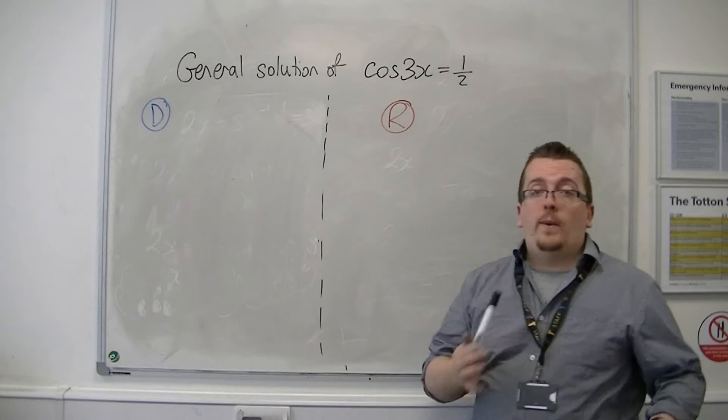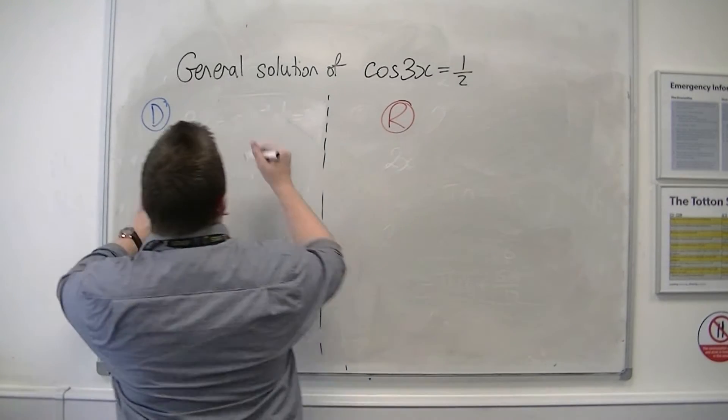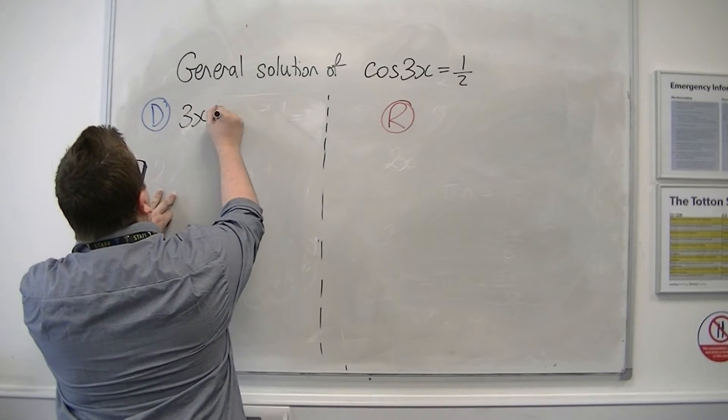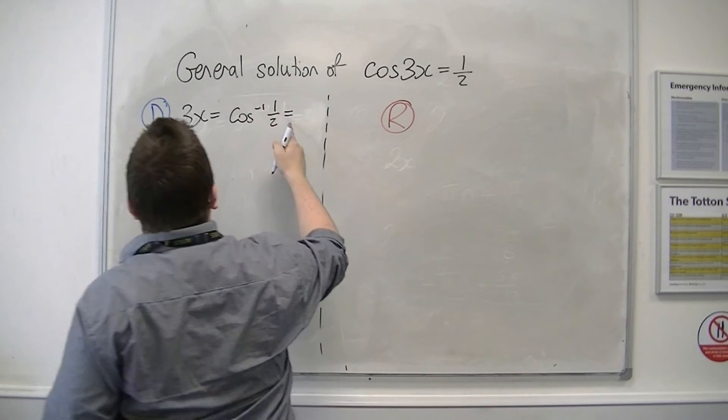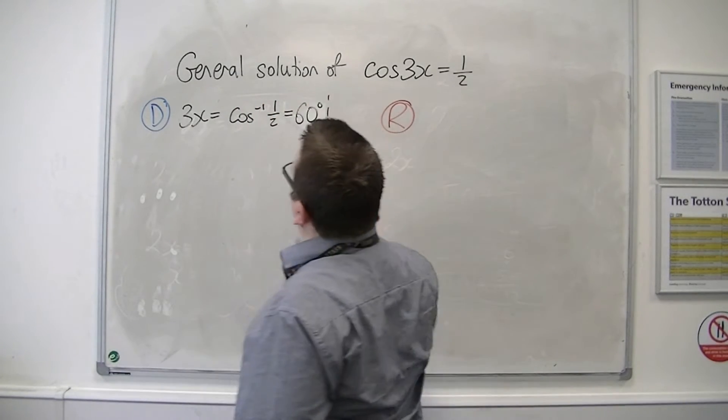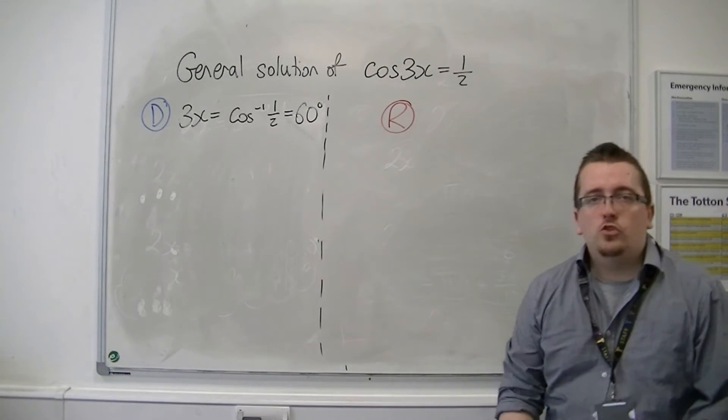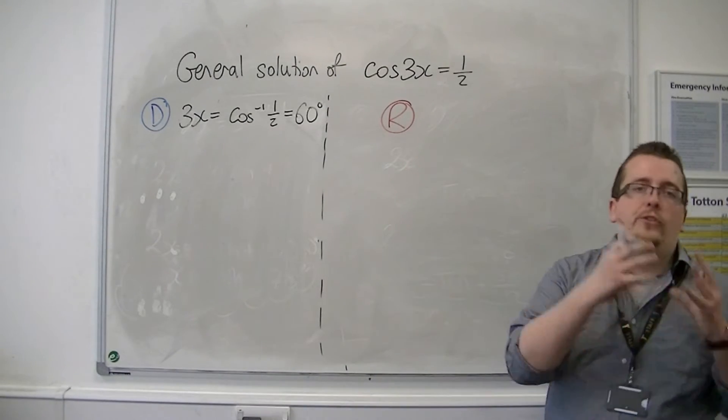So first things first is you inverse cosine both sides. So 3x is equal to inverse cos of 1 half. So inverse cos of 1 half is 60 degrees. So make sure you put the 3x equals 60 degrees.